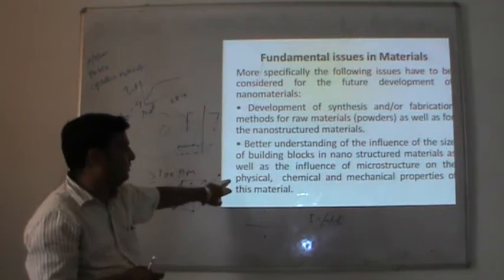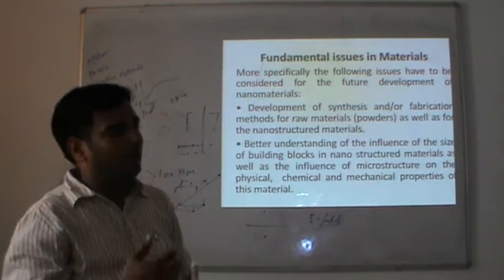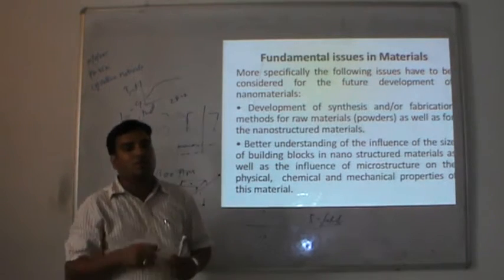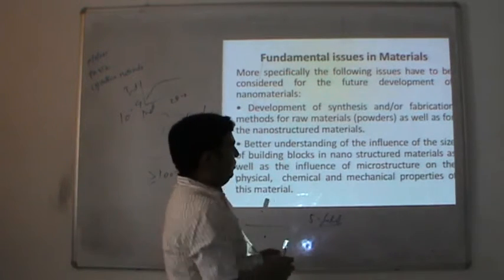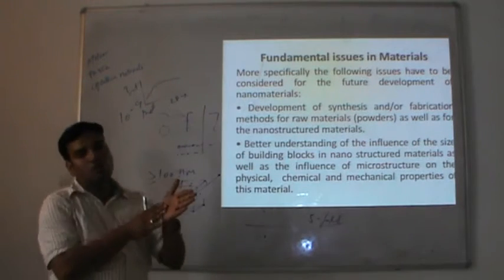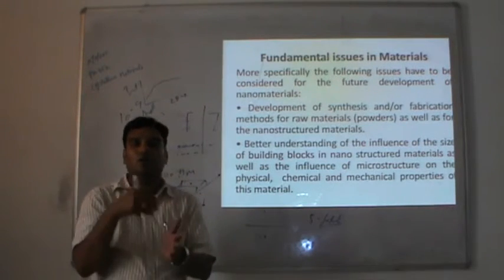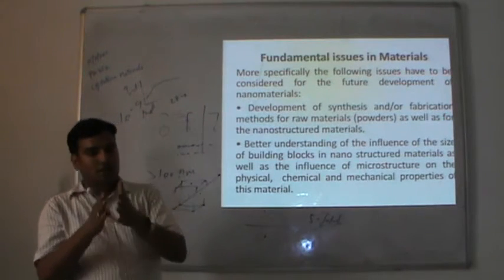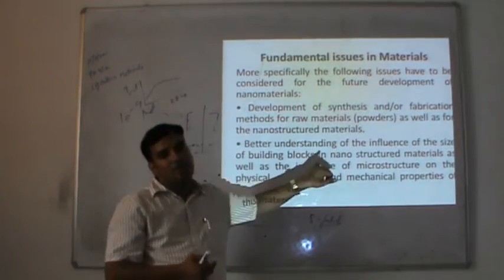The second fundamental issue: better understanding of the influence of the size of building blocks in nanostructured material, as well as the influence of microstructure on the physical, chemical, and mechanical properties of these materials. If I have gold nanoparticles or silver nanoparticles with a uniform distribution, it will be fine. But for non-uniform size distribution, how will the nanostructured particle interact with the micro-sized particle? Whether they behave the same or not, and how microstructure and nanostructure together change the physical, chemical, and mechanical properties of the material.